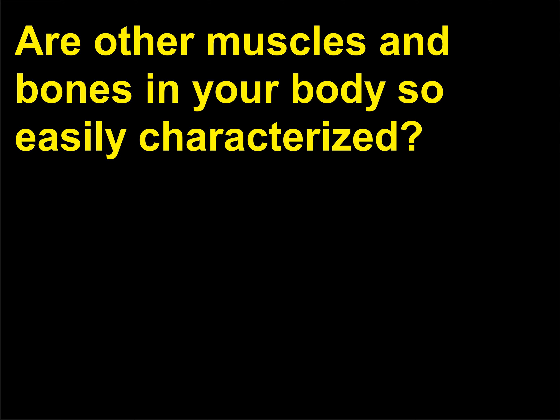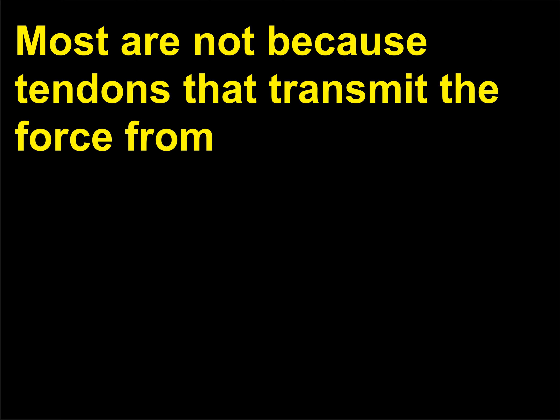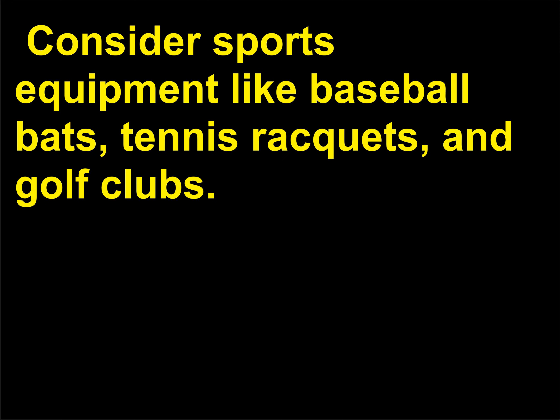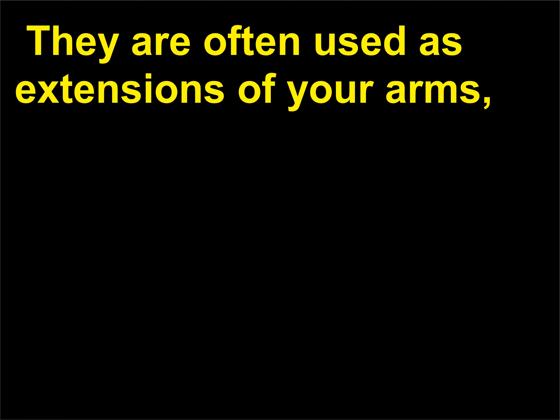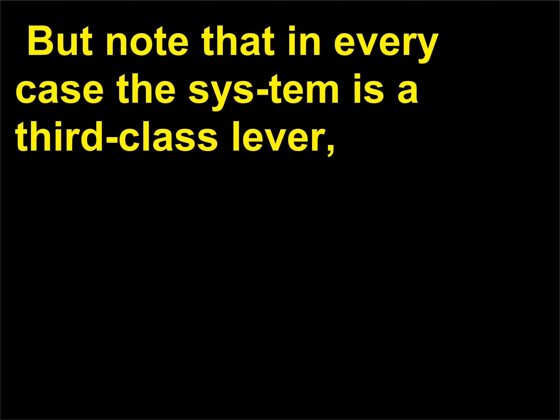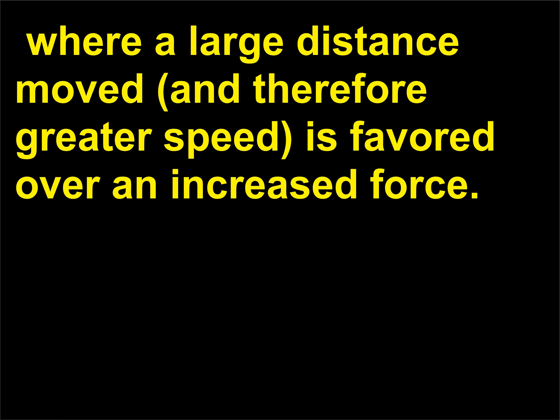Are other muscles and bones in your body so easily characterized? Most are not, because tendons that transmit the force from the muscle to the bone are long and go through several bends. Consider sports equipment like baseball bats, tennis rackets, and golf clubs — they are often used as extensions of your arms, so the person plus the bat or club has to be examined together. In every case the system is a third-class lever, where a large distance moved — and therefore greater speed — is favored over an increased force.